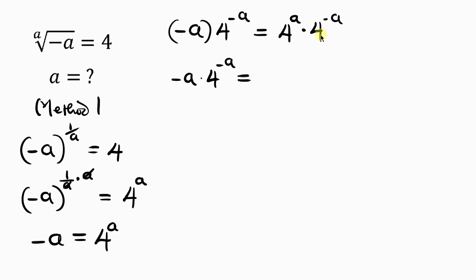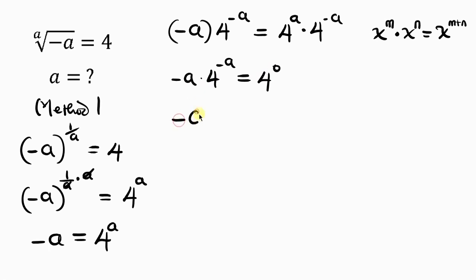On the right, we apply the law of indices: when I have x to the m times x to the n, as long as the bases are equal, we take one base and add the powers. So the bases are equal — I take base 4 and add the powers: a plus negative a is 0. So negative a times 4 to the negative a equals 4 to the 0, and any value raised to the 0 is 1. We've made the right hand side a unity.